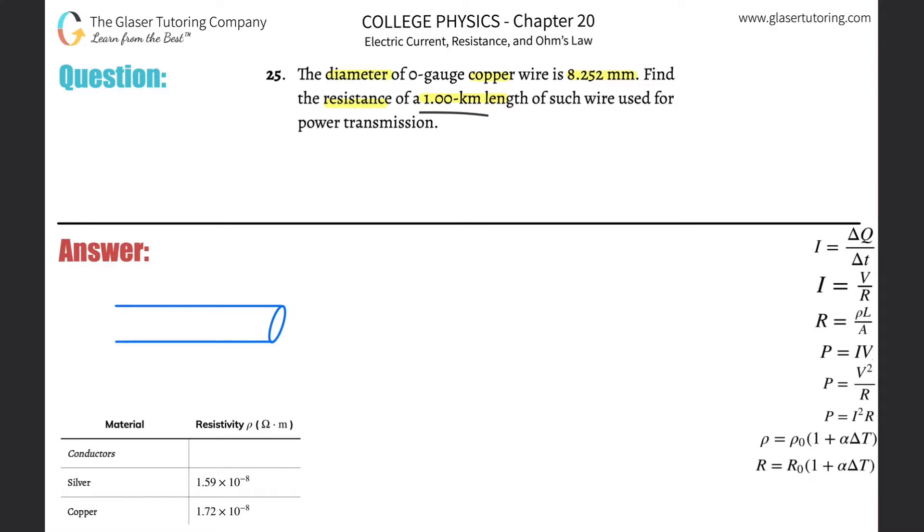So they tell me the length of this particular wire, the length of this wire here is going to be one kilometer, but we need that in terms of meters. So that's just simply 1,000 meters. All right, so that's the length of the wire: 1,000 meters.